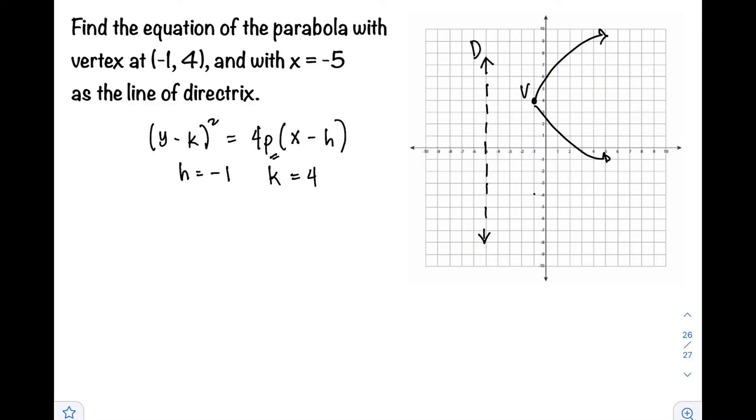By definition, p is the difference between the vertex and the focus, and between the vertex and the directrix. If we count from our graph, the vertex is at (-1, 4) and the directrix is at x = -5. The difference between them is 4 units.